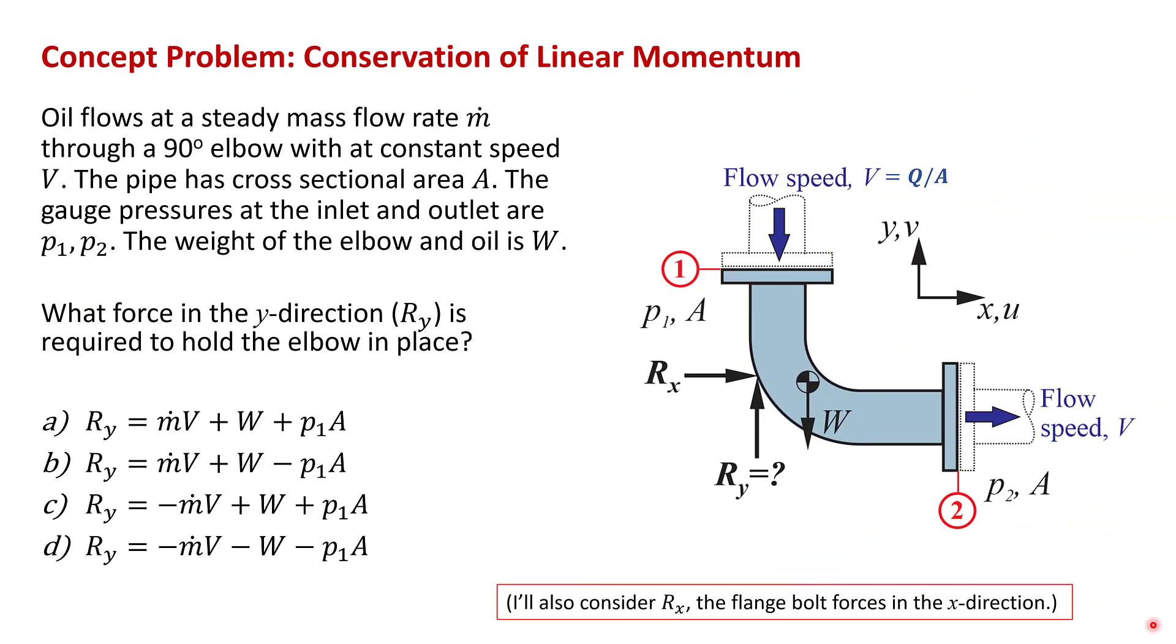This is another concept problem that doesn't involve any calculations. Oil flows at a steady mass flow rate m dot through a 90 degree elbow at constant speed v. So v is just the volume flow rate divided by the cross sectional area of the pipe. The gauge pressures at the inlet and outlet are p1 and p2, and the weight of the elbow and the fluid in this elbow is w.